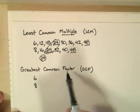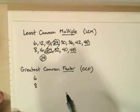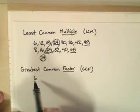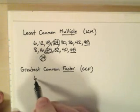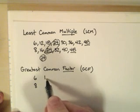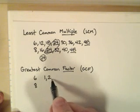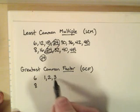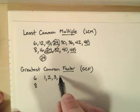On the other hand, in greatest common factor, you want to concentrate on the word factor—things that six is divisible by. We can divide six by one, we can divide six by two, we can divide six by three, and we can divide six by six, of course.